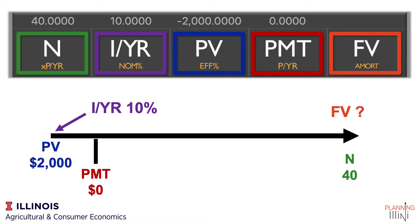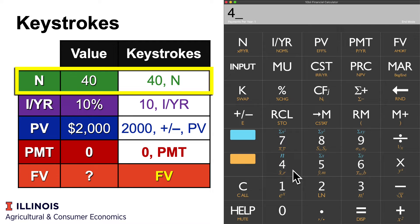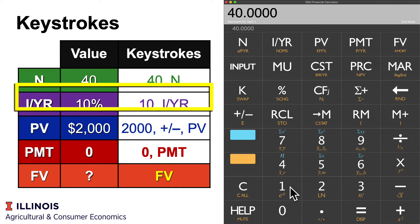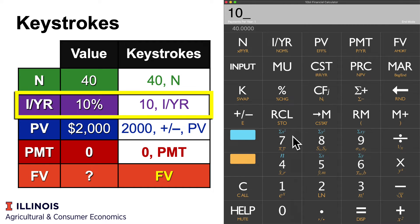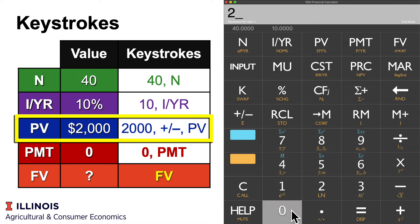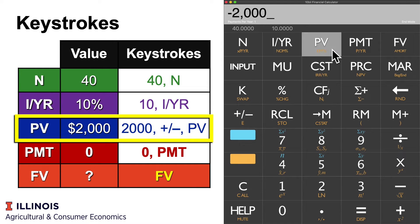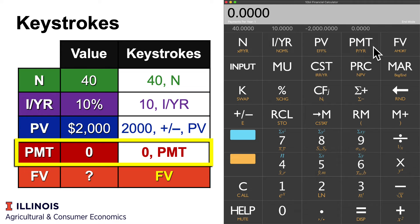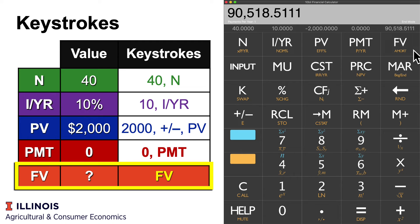Now that we've got that down, we can use our calculator to enter those keystrokes. We start by entering 40 as N for number of periods, then 10 as I/YR for the 10% interest rate per year. We enter 2,000 plus/minus as present value, because that $2,000 leaves our wallet to get invested. Zero is payment, and we solve for future value — which gives us $90,518.51.